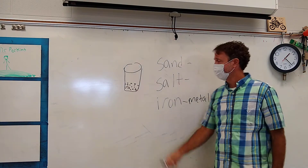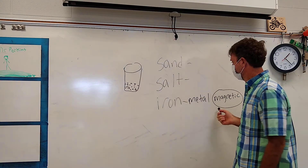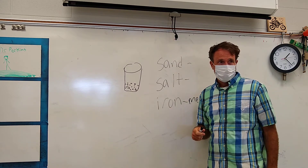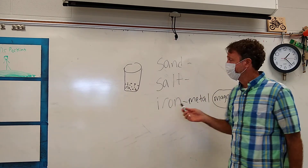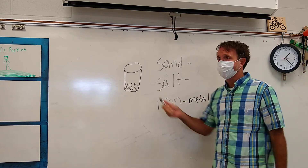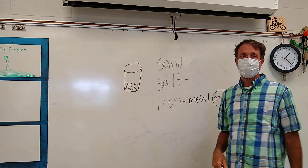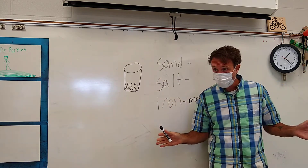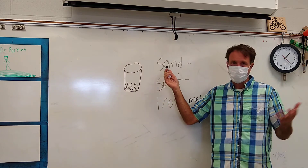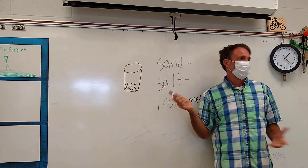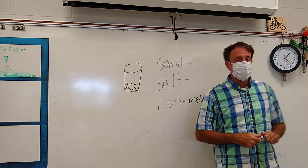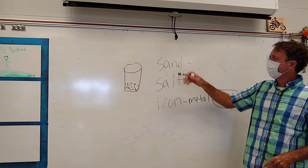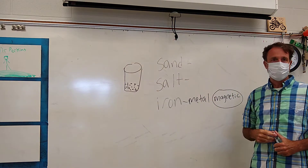It would be a great idea to remove the iron with a magnet first, because there are some other properties of sand and salt to consider. Obviously they're different colors — sand is brown or sand-colored, and salt is generally white. But there's another difference between sand and salt beyond color.